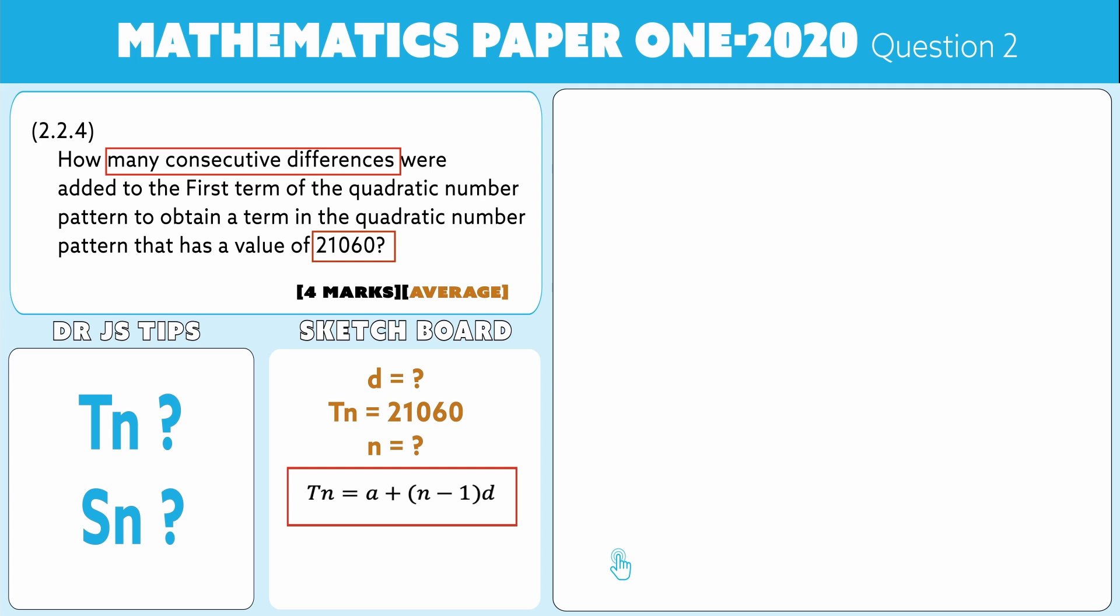Okay folks, so we are going to go back to the general term of that quadratic sequence, that quadratic sequence that gives us 6n² - 9n, and they told us that this is equal to 21,060. And that's the equation that we need to solve.